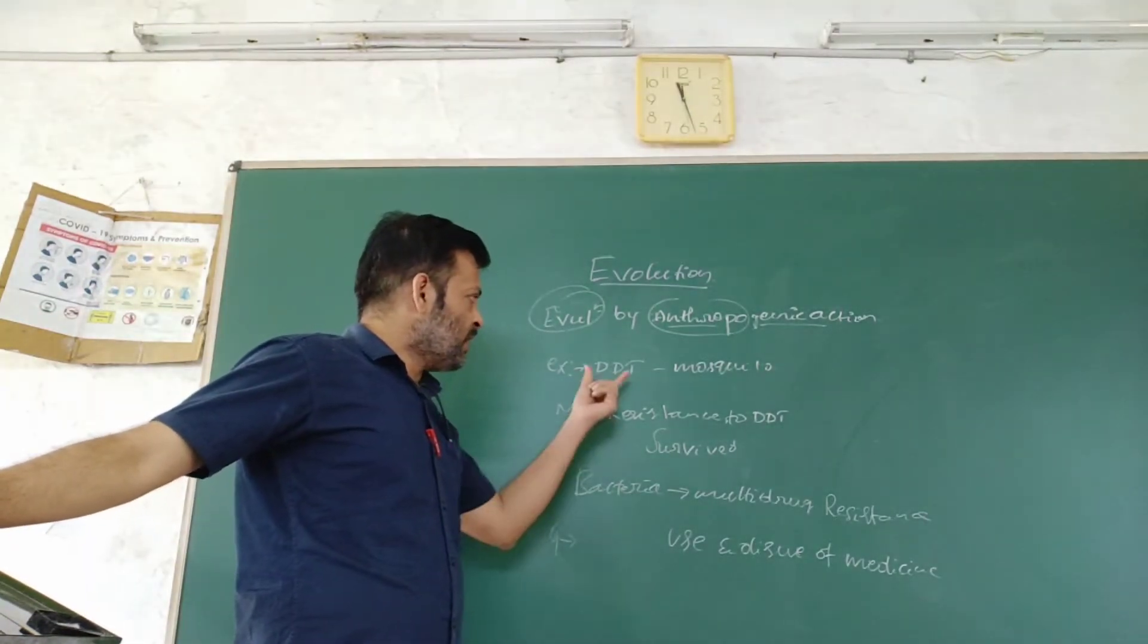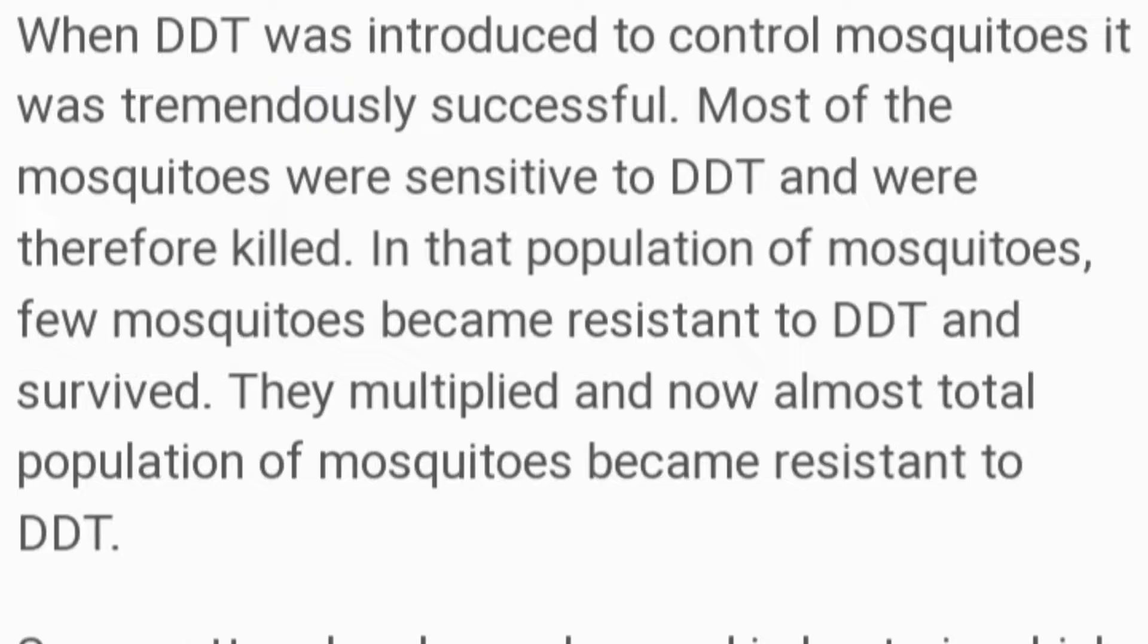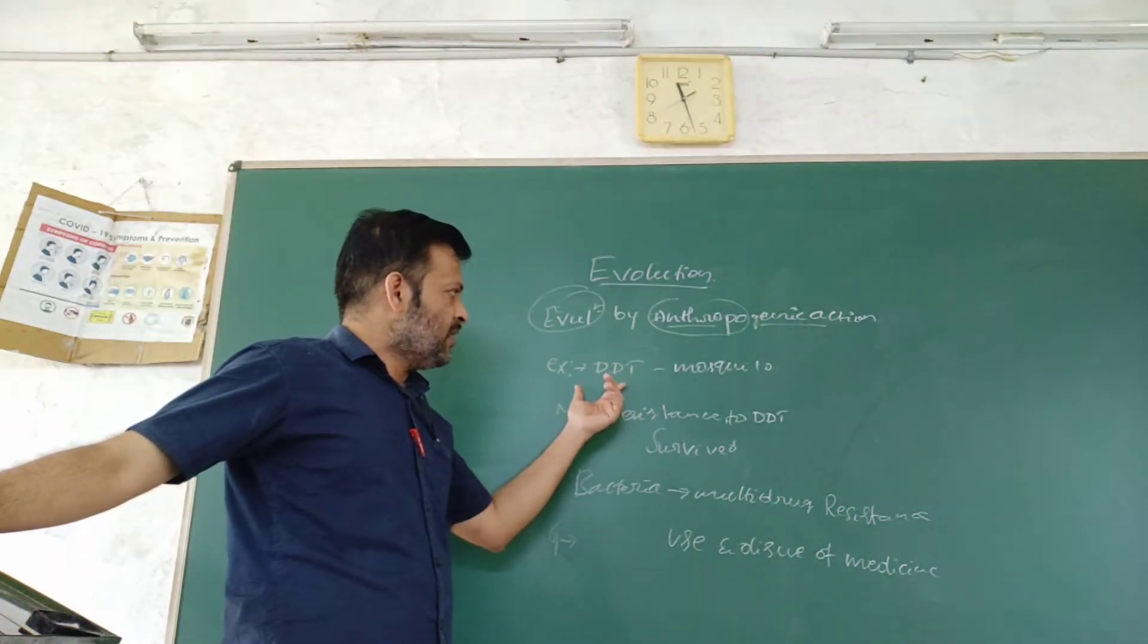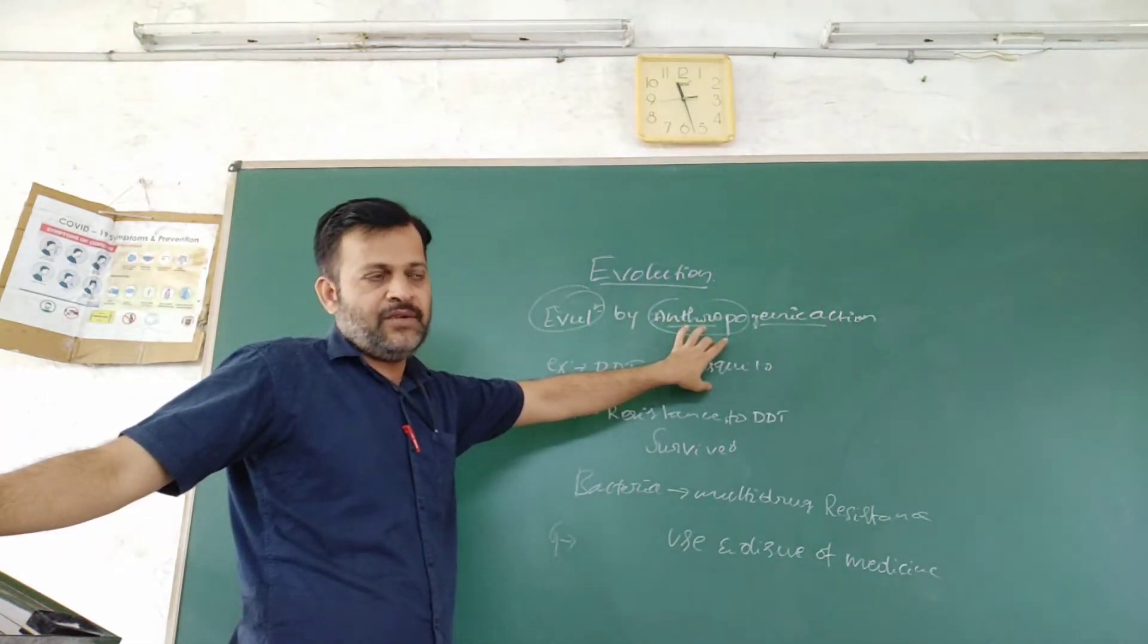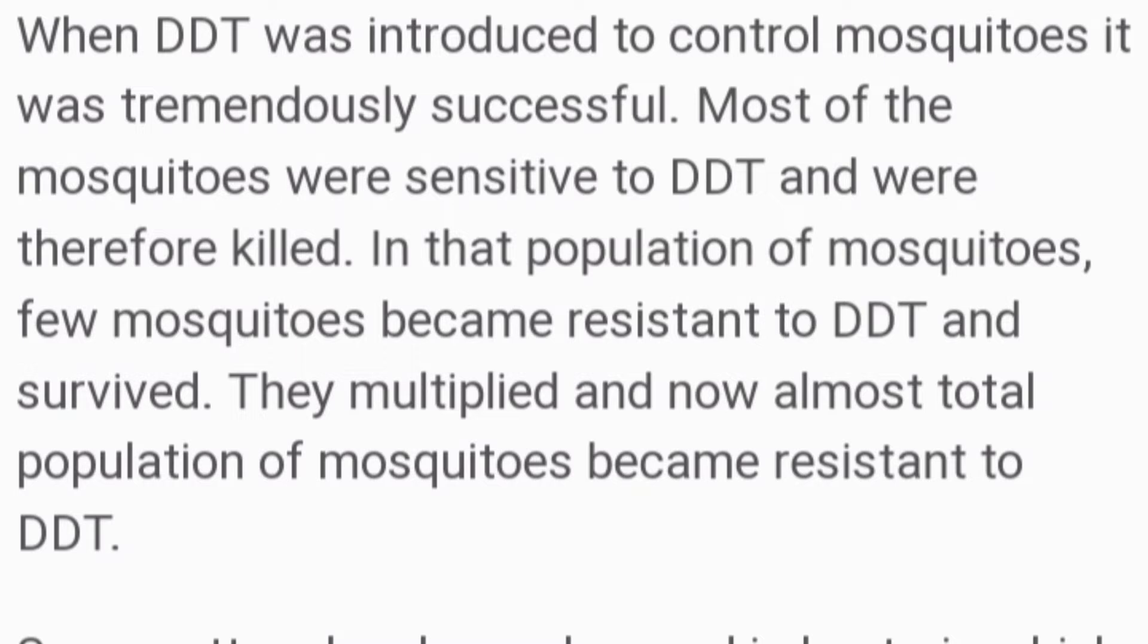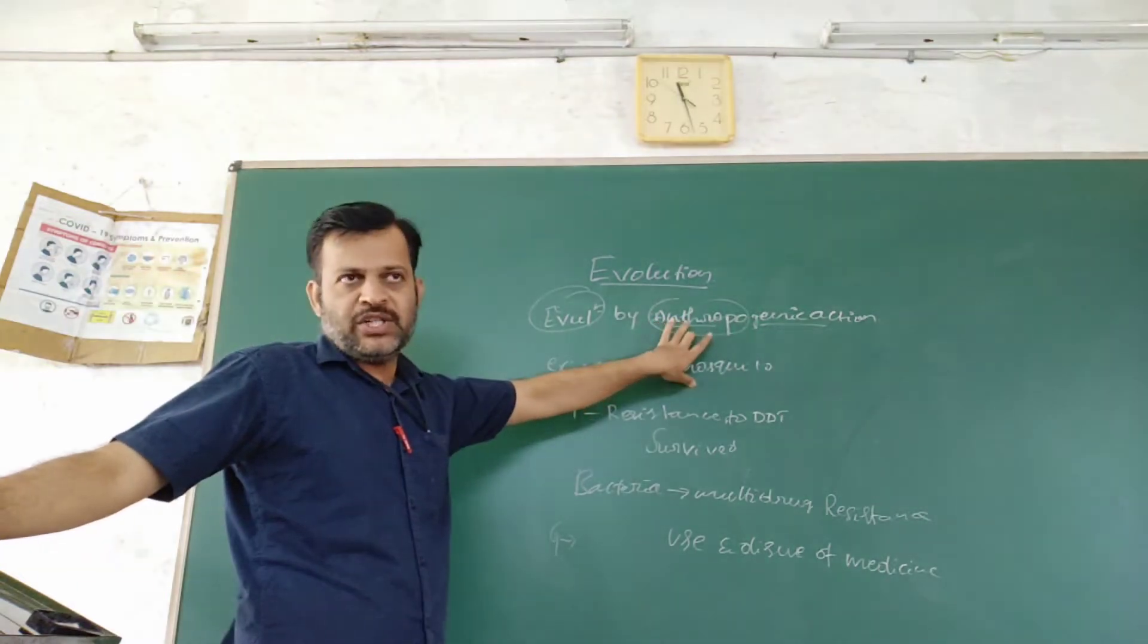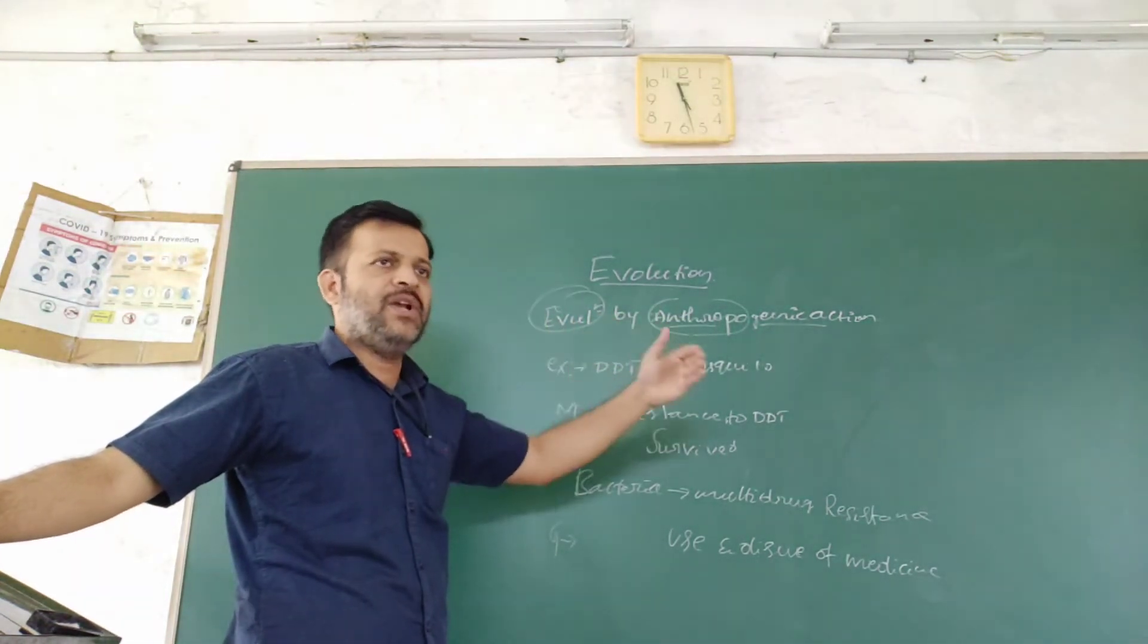Here, DDT is one of the pesticides, a chemical insecticide we use in agricultural practices. This DDT is used to control mosquito populations. Wherever there is stagnant water, they spray the DDT in that area. In the beginning, one or two generations of mosquitoes are killed by the DDT.